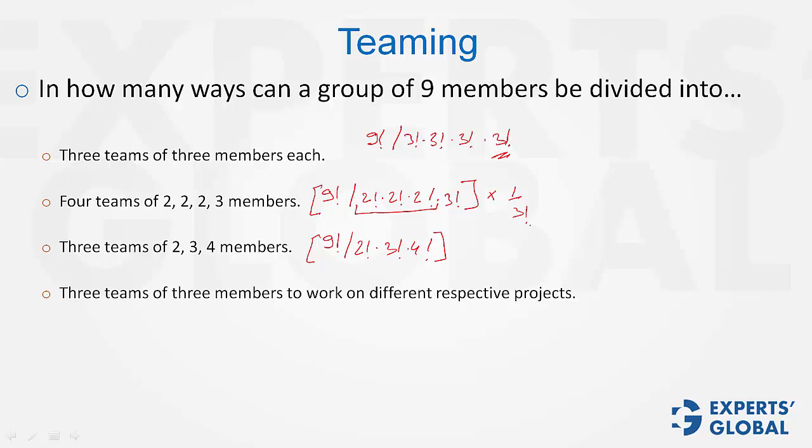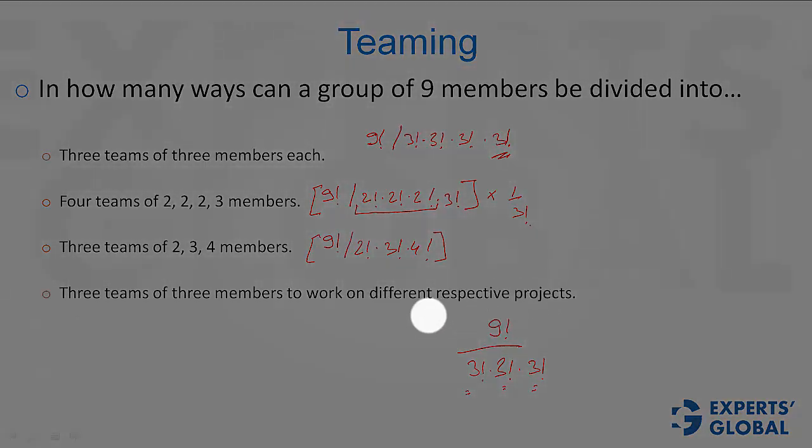And now, the last case. This is a very interesting question. 9 factorial upon 3 factorial, 3 factorial, 3 factorial. And although the teams have equal number of members, since they have to work on different projects, there are 3 projects A, B, and C, and there are 3 members working on each.